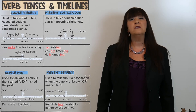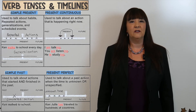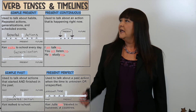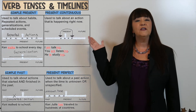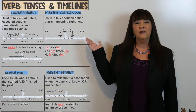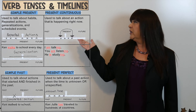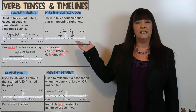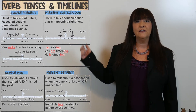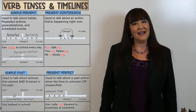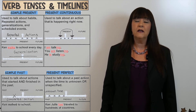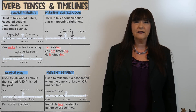The first verb tense we're going to talk about is the simple present. Then we'll look at present continuous or progressive, simple past, and then present perfect.